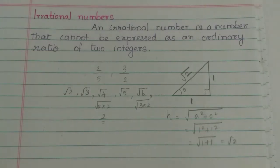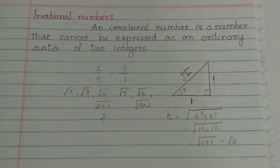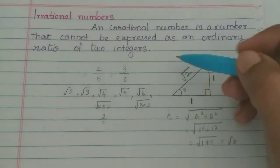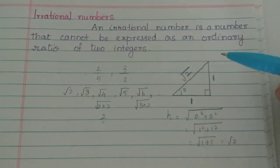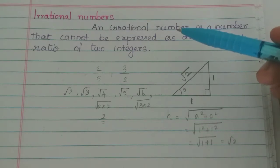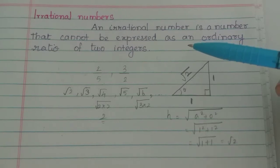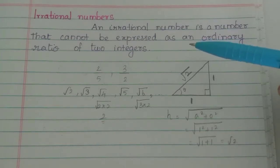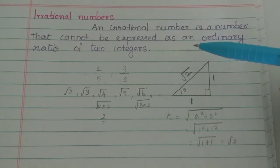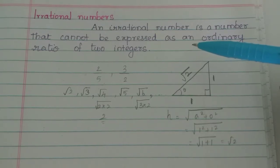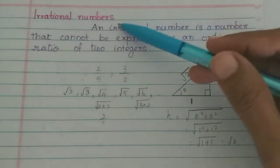If you look at an irrational number, it is non-terminating. If you look at a recurring decimal, that is a rational number — there is non-terminating but the quotient is repeated, so we say recurring, and that is a rational number. But non-terminating and non-recurring — that is our irrational number.